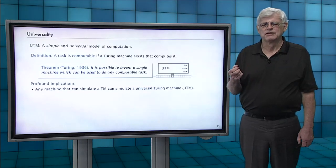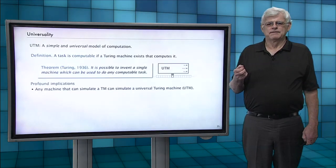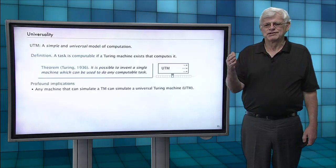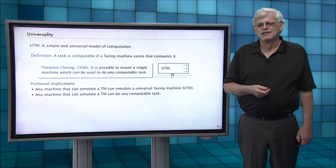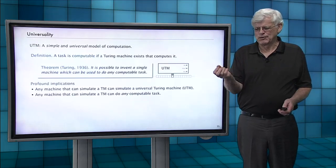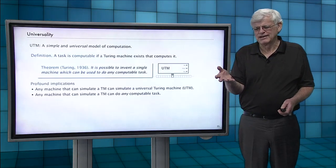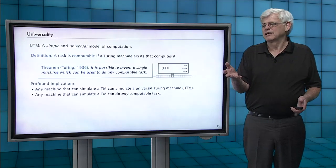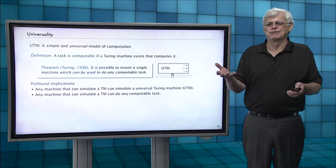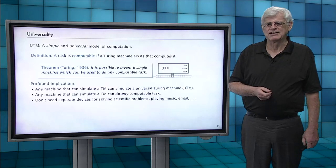And so, one thing is that if you can simulate a Turing machine, you could actually simulate a universal Turing machine. So, any machine that you make, if it can simulate the operation of a Turing machine, then it can simulate, it can do any computable task. Because in particular, it can do a universal Turing machine, which can do any computable task.